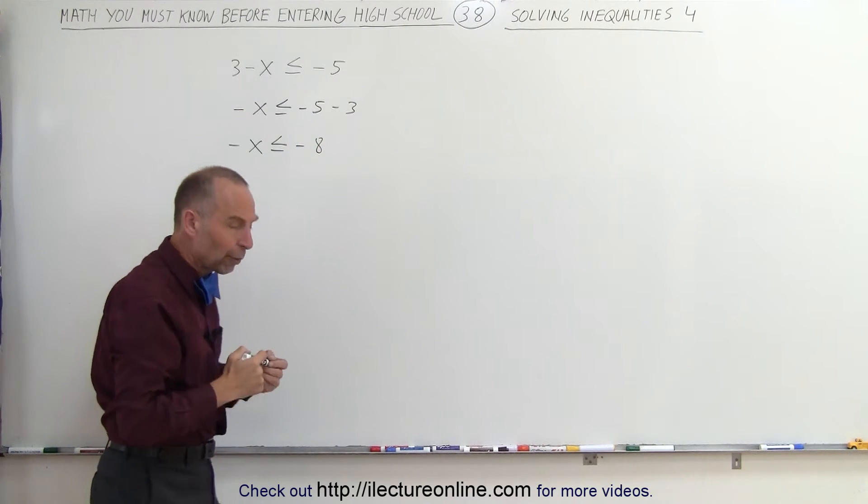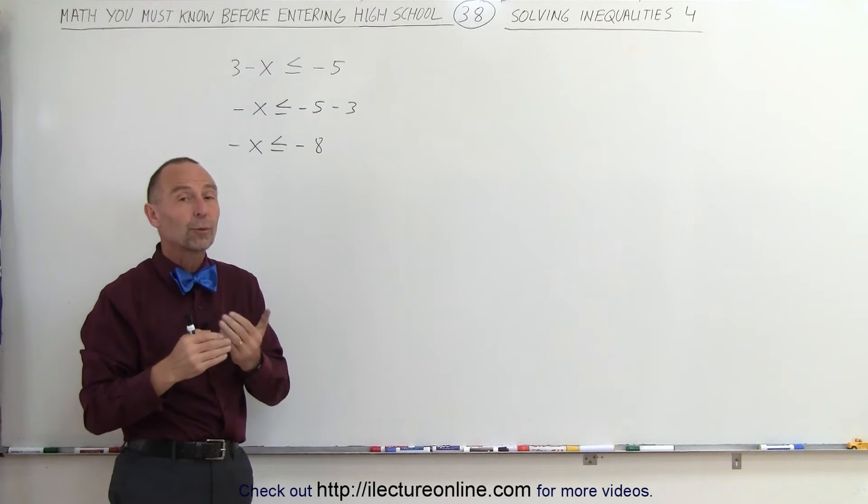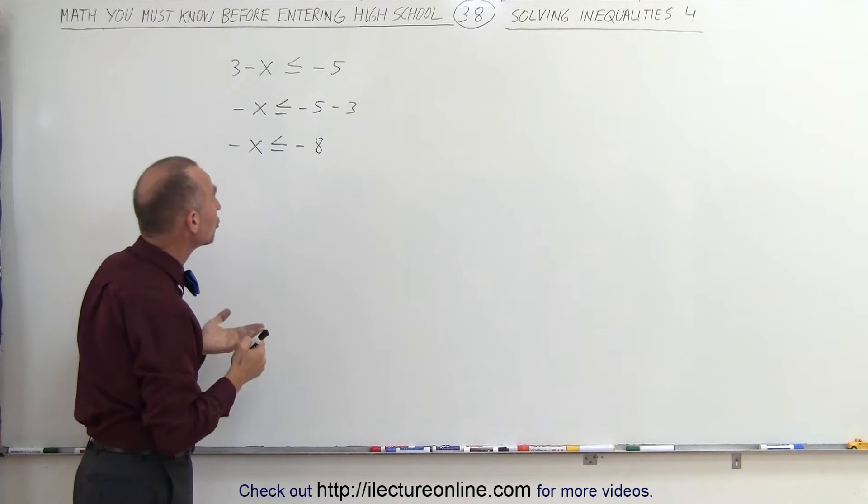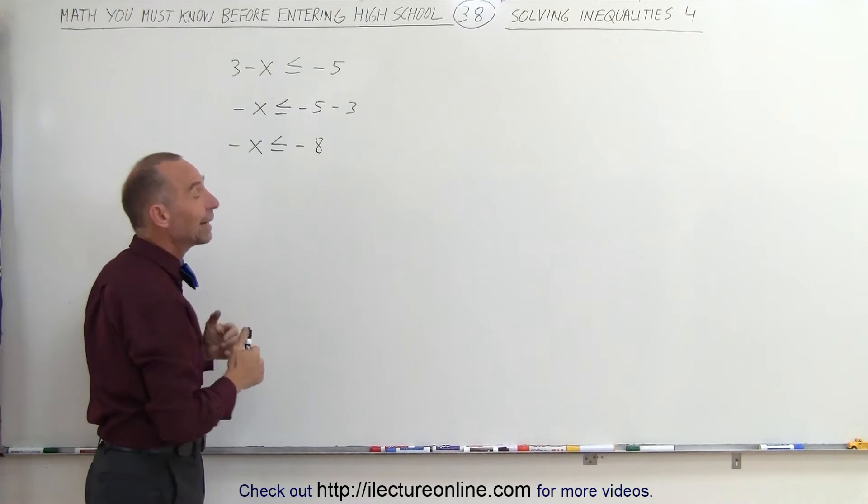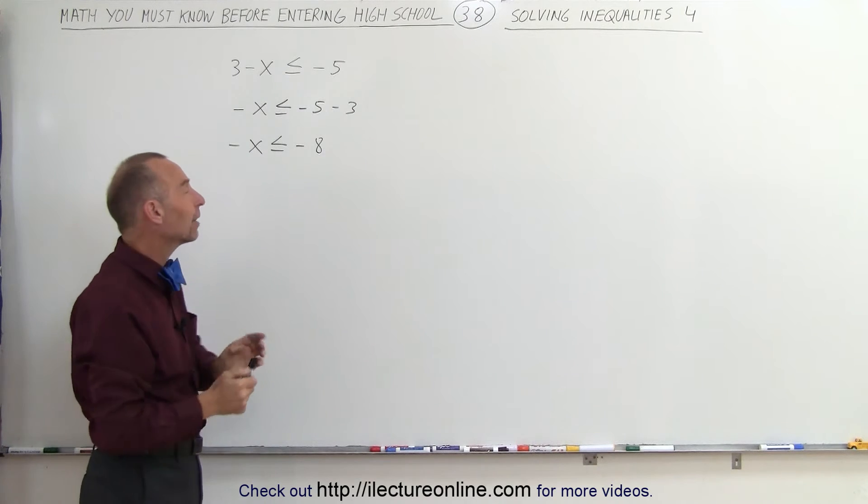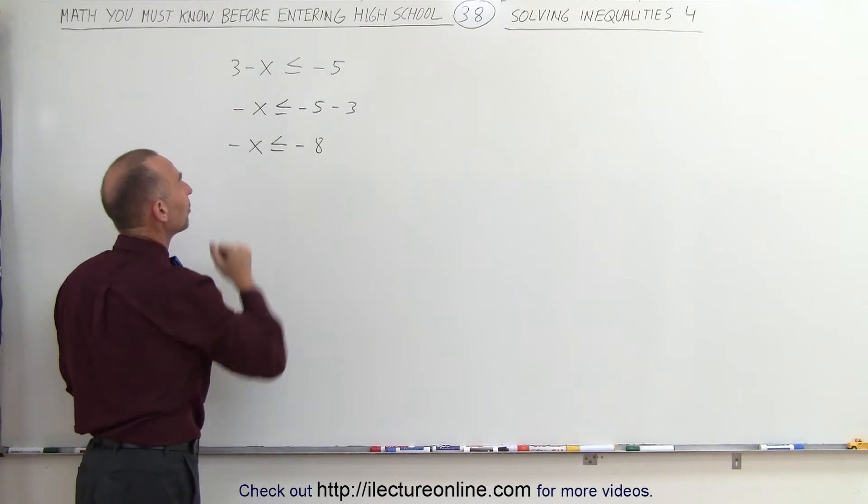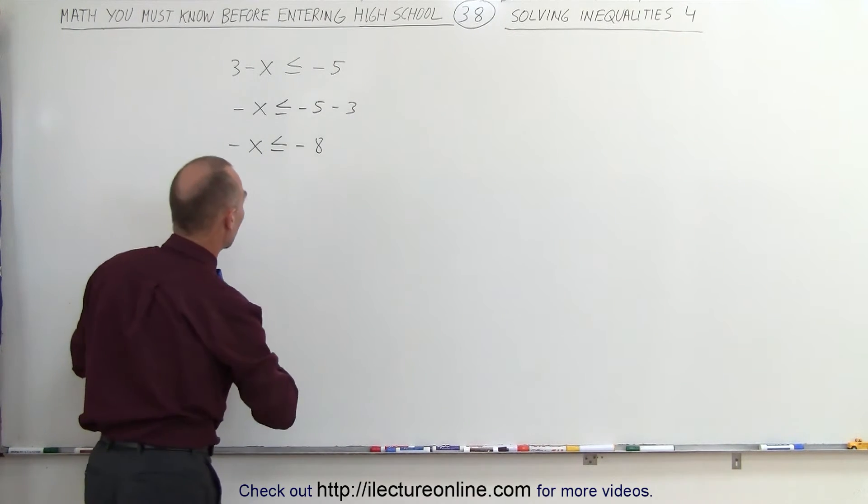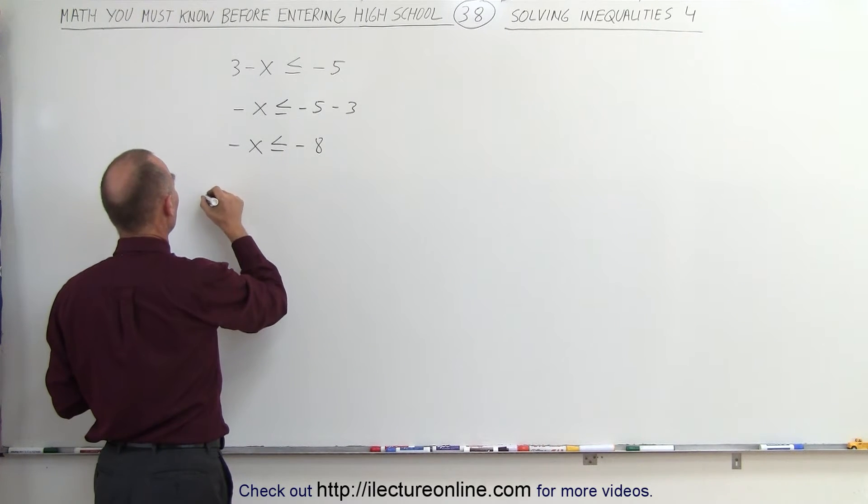But we're not looking for what minus x is equal to, we're looking for what x is equal to. So what we're going to do is multiply both sides of the inequality by negative 1. But when we do that, we have to flip the inequality symbol around.